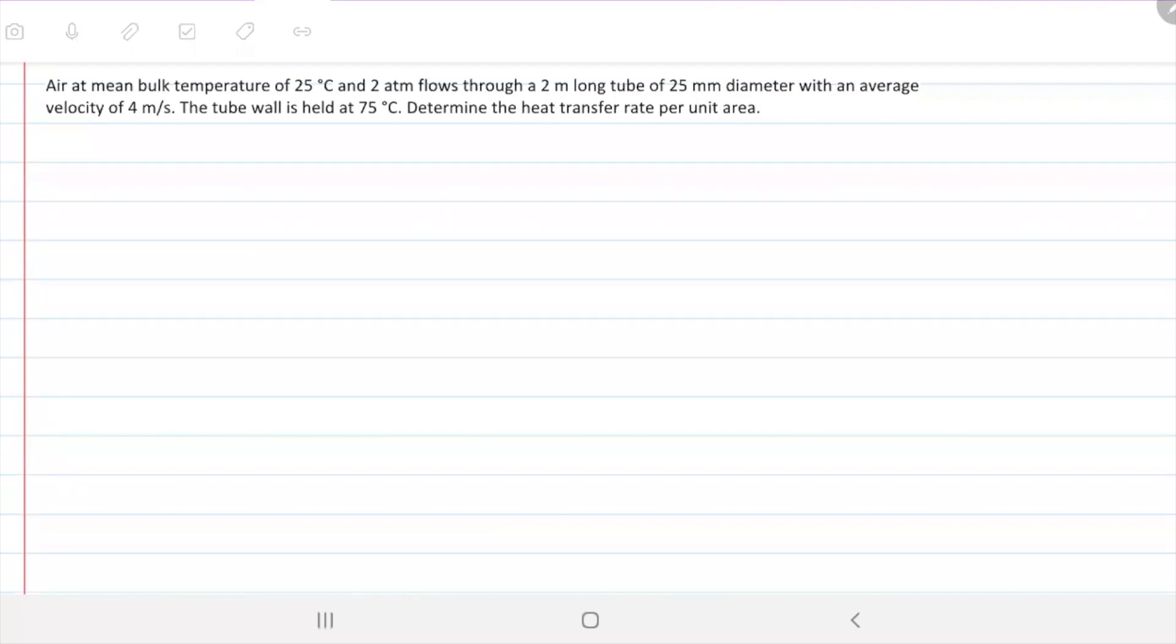Air at mean bulk temperature of 25 Celsius and two atmospheres - a lot of things to highlight right from the get-go. We need to highlight there's two atmospheres there, so we need to account for that, and also that we're dealing with bulk temperature, so we don't need to do sum up with anything, any other temperature to find the properties on the table.